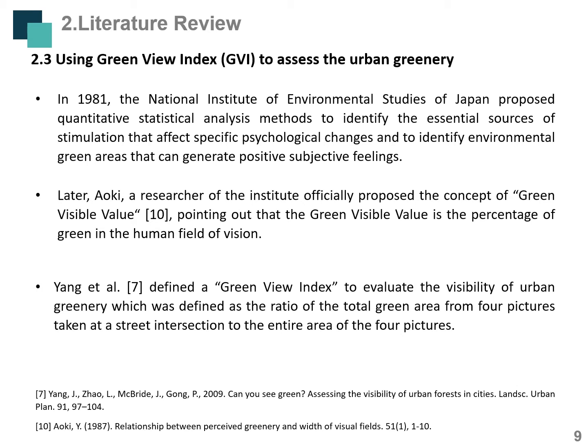The third part of the literature covers research on using the green view index to assess urban greenery. In 1981, the National Institute of Environmental Studies of Japan proposed quantitative statistical analysis methods to identify environmental green areas and their effect on psychological changes. A researcher then proposed the concept of green visible value, meaning the percentage of green in the human field of vision. In 2009, Yang et al. further defined a Green View Index (GVI) as the ratio of the total green area from four pictures taken at a street intersection to the entire area of those four pictures.